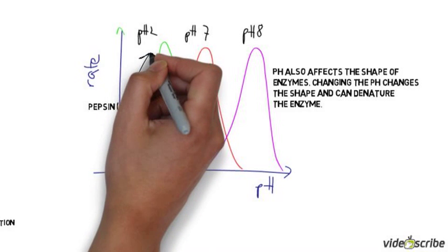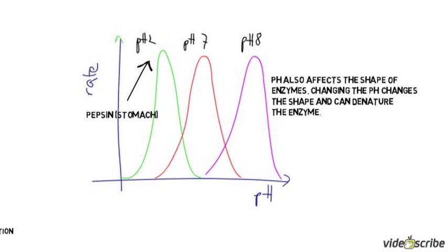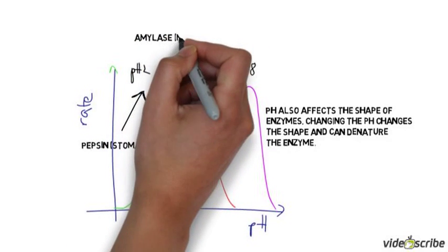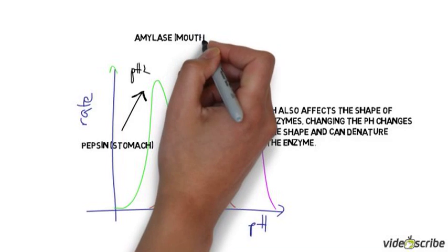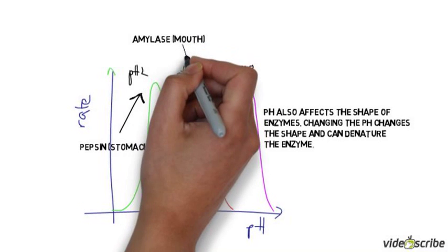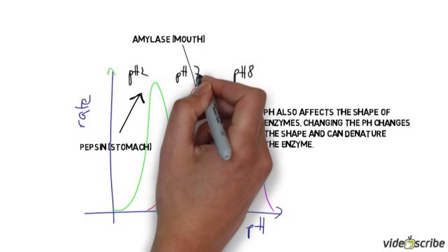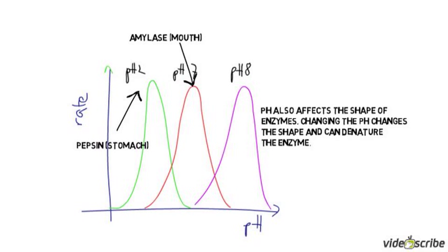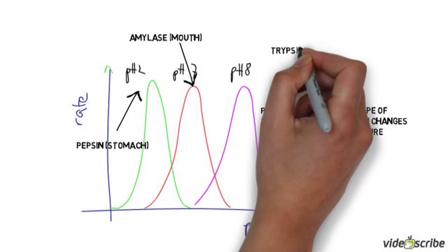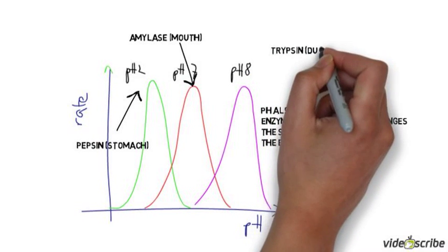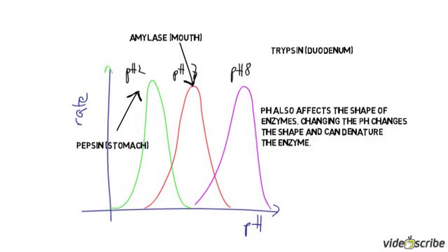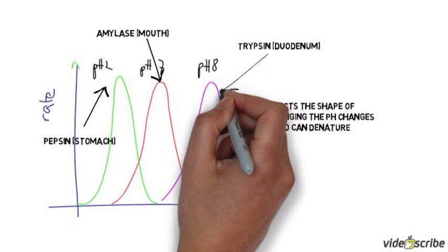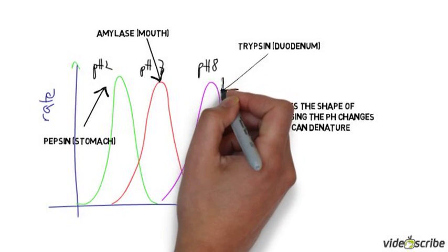If the pepsin were to get into your mouth or into your small intestine, it would no longer work. Amylase, which works in your mouth and digests carbohydrates, works best at pH 7. Once it gets to the stomach, it gets denatured and doesn't work. Trypsin is produced by the pancreas and works in the small intestine at pH 8.